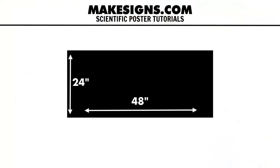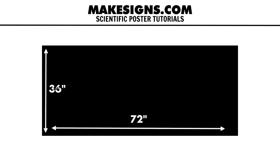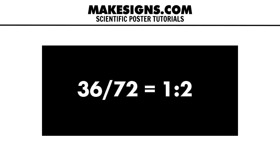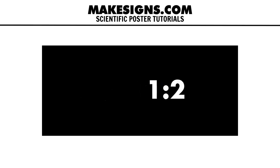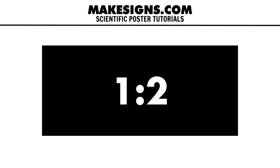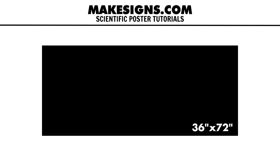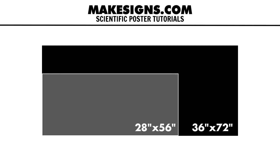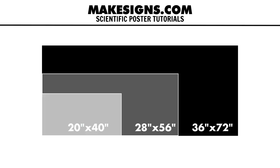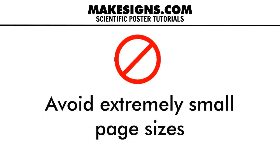How did I come up with 24 by 48 inches? It's basically the same proportion as your final output — a 2 to 1 proportion. A 36 by 72 poster has a height to width ratio of 1 to 2, so any PowerPoint slide with the same aspect ratio of 1 to 2 can be used to create that 36 by 72 inch poster. So 24 by 48 would work, as would 28 by 56 and 20 by 40. Avoid using very small page sizes like 6 by 12 inches, since they don't give you enough room to work with.